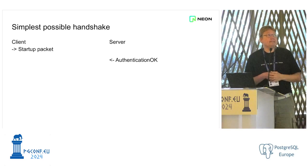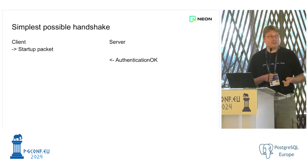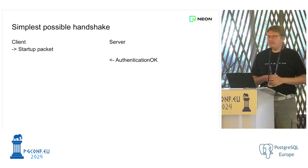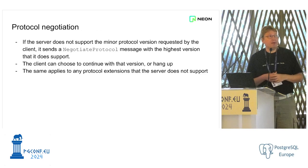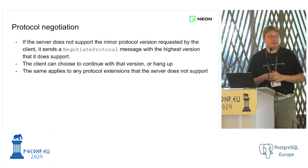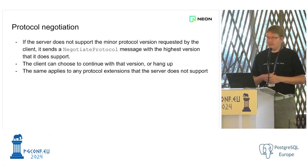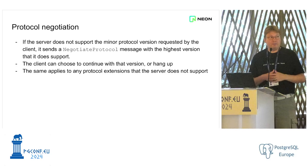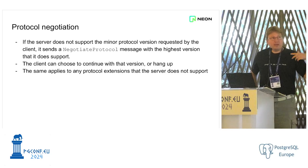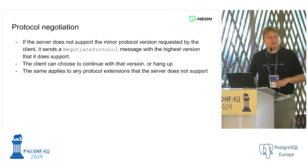To put this all together: in the simplest case, the client sends the startup packet and the server responds with OK. There's also a step for protocol negotiation — if the server doesn't support the minor protocol version the client requested, it responds with a negotiate protocol message, and the client can fall back or hang up. You don't see this in the wild today because we don't have any minor versions or extensions yet, but the code is there. As we start adding protocol extensions, we'll start to see this in the wild.